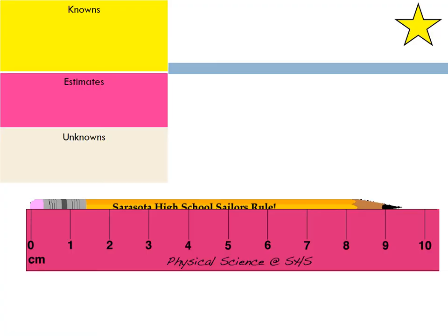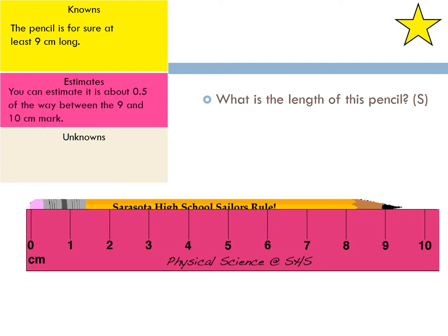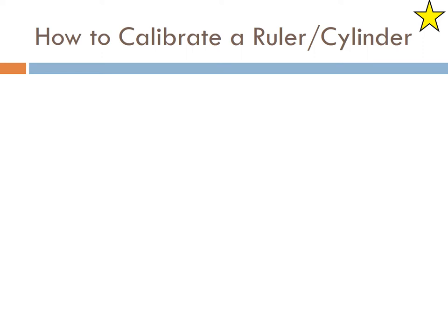That is also applied to measurements or calibration. So known things in this picture - what is the length of a pencil? We know it's going to be something 9 centimeters long. It's past 9, hasn't reached 10. So we know it's 9. An estimate would basically be maybe halfway or 0.4 of the way between 9 and 10. Unknowns - there's nothing that is unknown here. We know that the unit is 10 centimeters. And the estimate is around 9.5, 9.4.